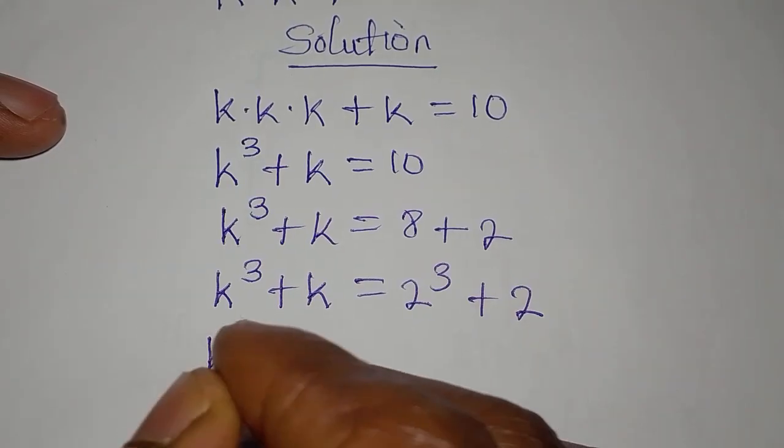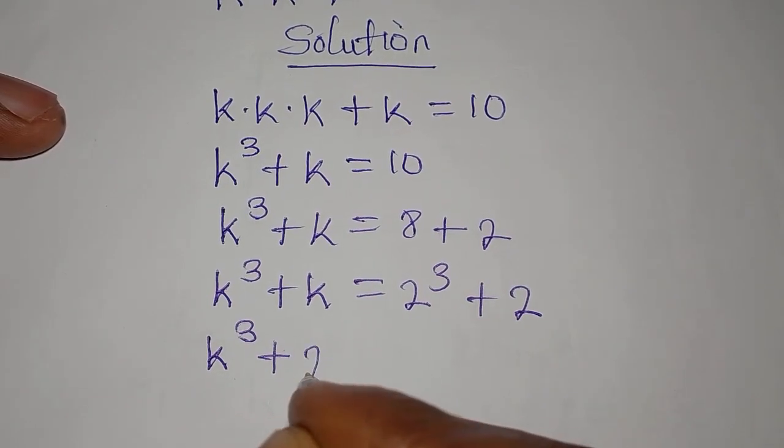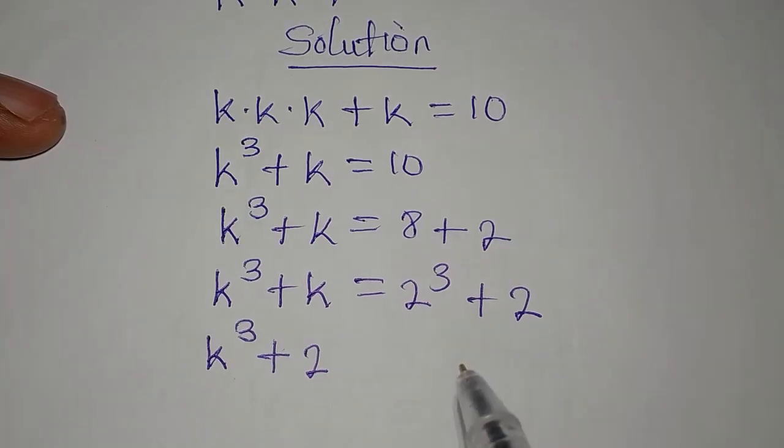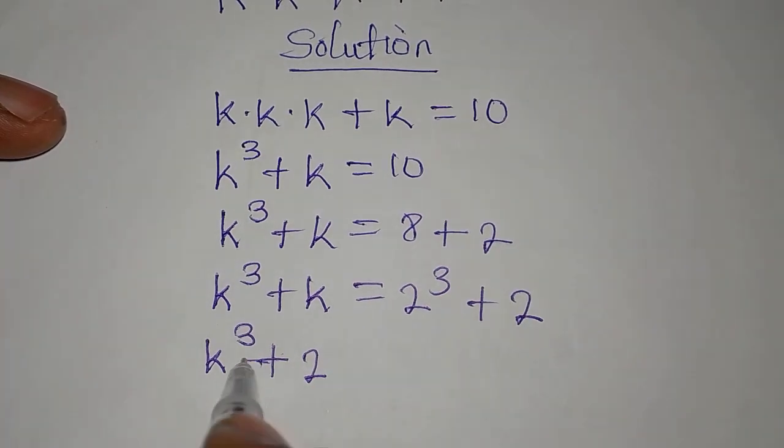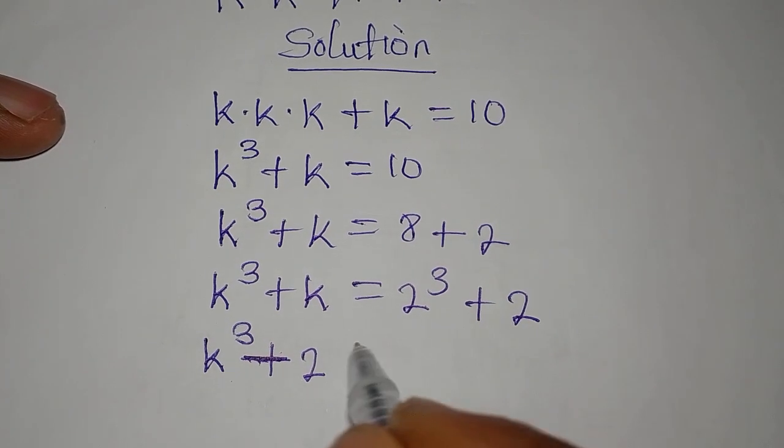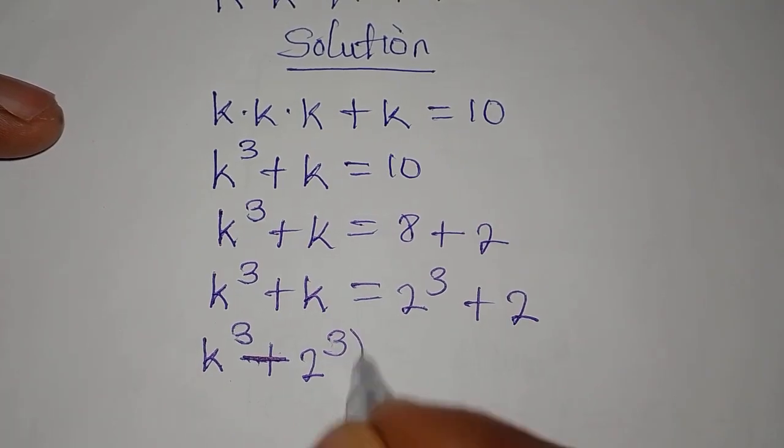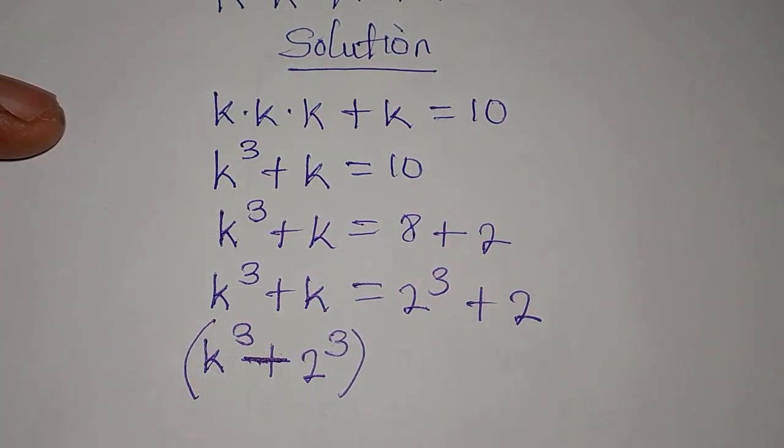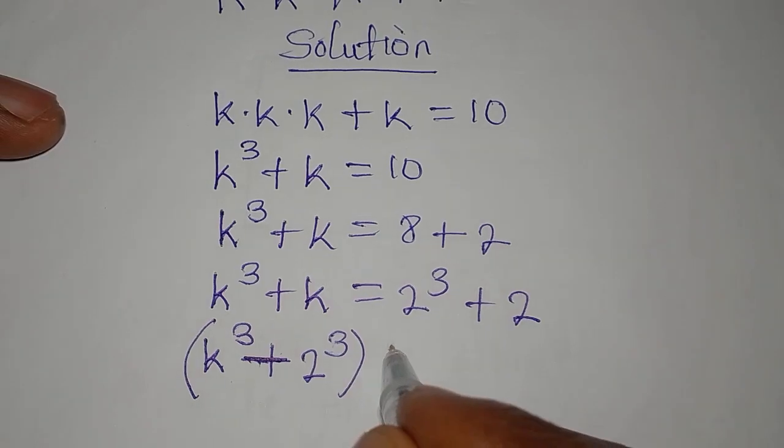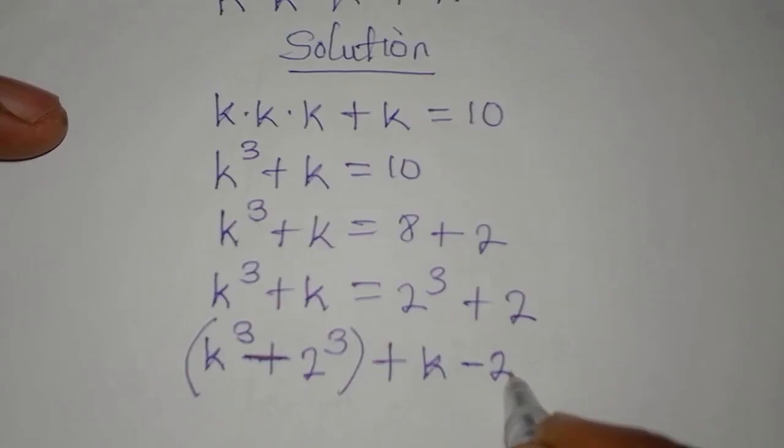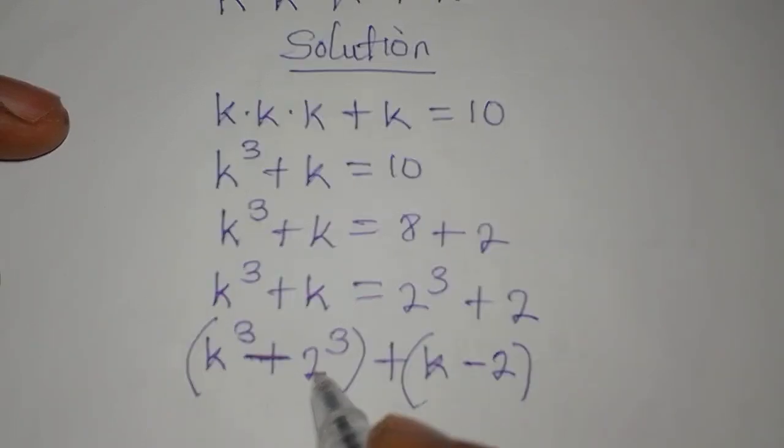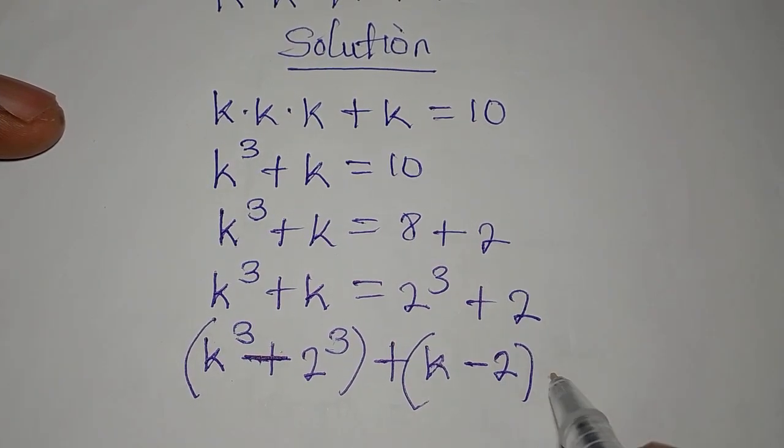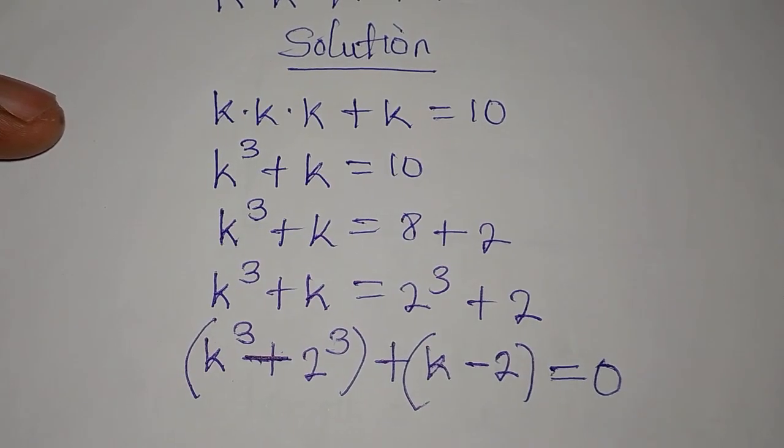So we have k to the power of 3 plus 2, negative now, because this is coming here to become negative. So this is negative 2 to the power of 3. Let's put this together. Then we have plus k negative 2, because this becomes negative, just like this. Then everything is equal to 0.